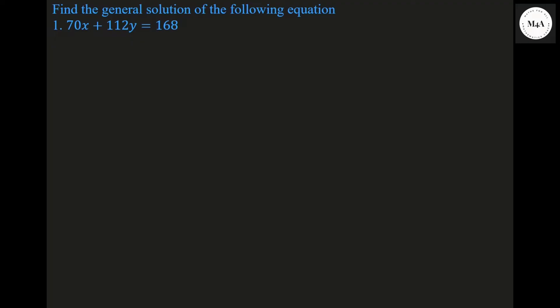First example: the given equation is 70x plus 112y equal to 168. We need to find the possible solutions. As in the previous class, I have told that the given Diophantine equations have infinitely many solutions, but we need to find the solutions which are integers — integer solutions we need to find.